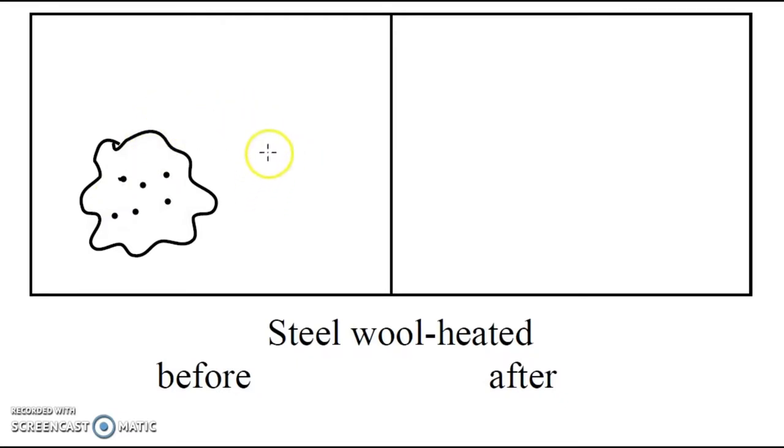And then what we did is we held this over top of a Bunsen burner flame, and when we held it over top of the flame, it sparked, it burned. It was awesome. And the color changed, right? So we know that the color changed. And the mass changed. We had a gain of mass.